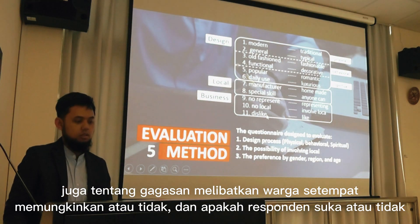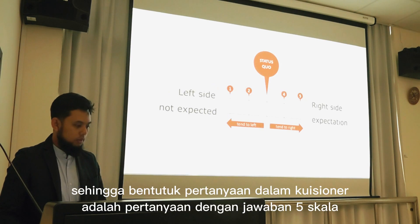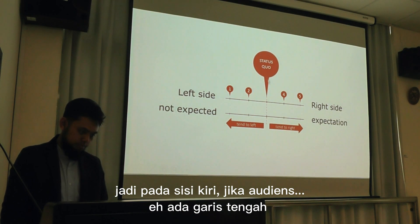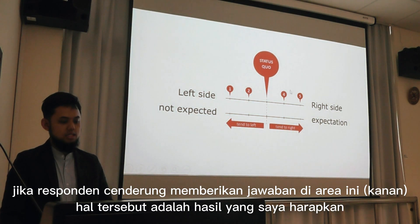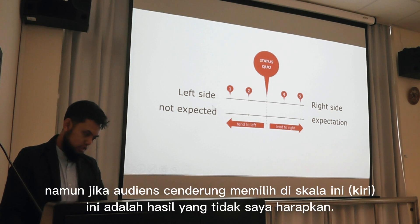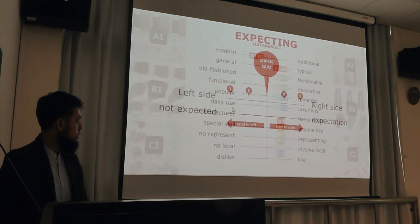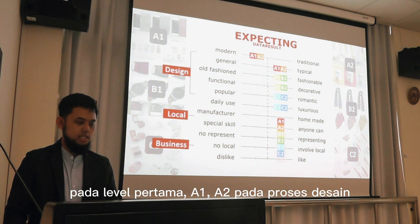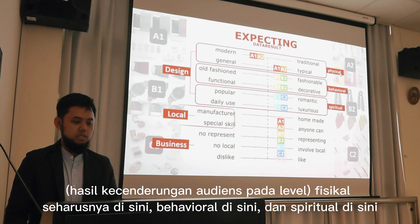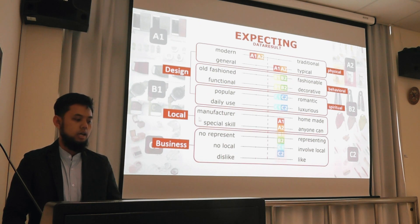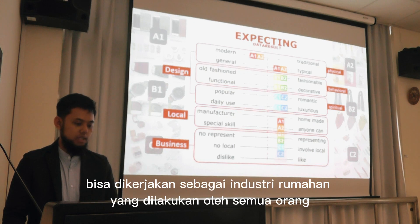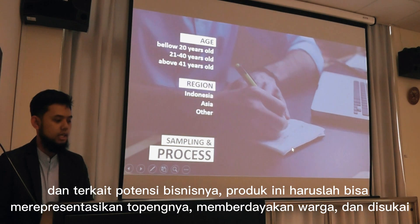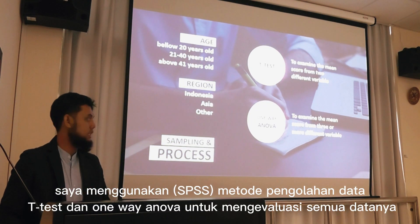I also ask about local involvement and people's preference — whether they like it or not. I make a five-scale questionnaire. There is a middle line, and if the respondent answers on one side it does not meet my expectation. This is my expected data result. I use t-test and one-way ANOVA to examine all of the data.